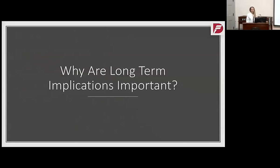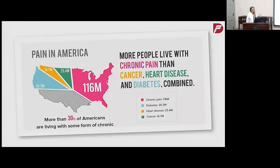So why are these long-term implications important? When you're dealing with critically ill patients or patients with a shorter lifespan, it's hard to see past their admission or past where you're treating them. More than 30% of Americans are living with some form of chronic pain. Most patients with chronic pain have comorbidities of diabetes, heart disease, or cancer. Since 2001, the Joint Commission had pain as the fifth vital sign, and since then, pain has been more adequately treated, which is increasing our opiate use.